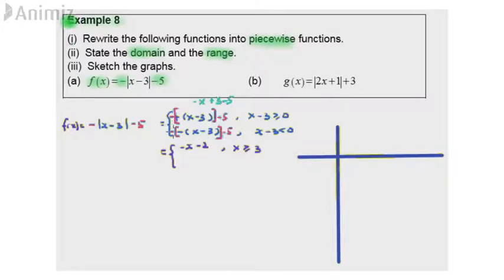For the other part, negative times negative is positive, give us positive x minus 3 minus 5. Give us x minus 8. This is for x less than 3.